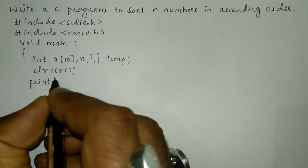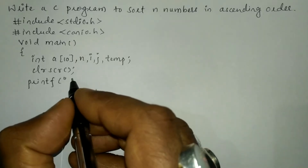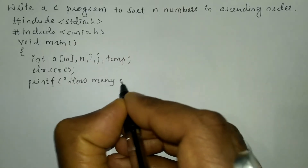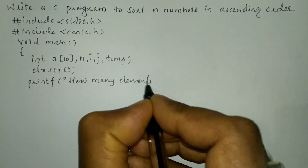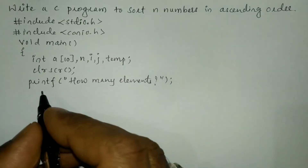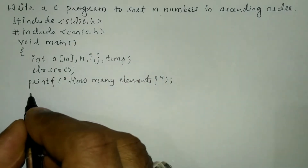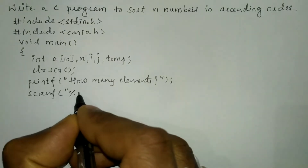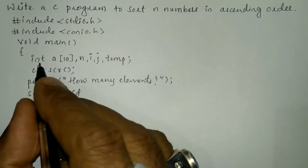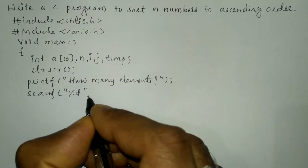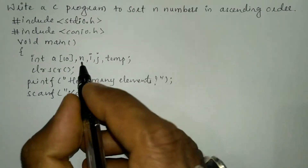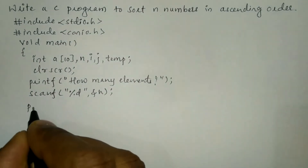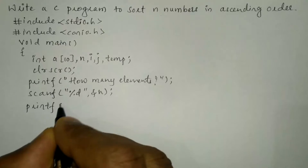Now I'm going to write the clrscr function, which is used to clear the screen. We'll ask the user how many elements using a printf function — in double quotation marks write 'how many elements'. Then we receive the response from the user through the keyboard using a scanf statement with the %d format specifier associated with int, and store it in &n.